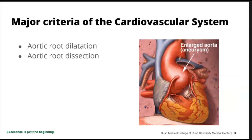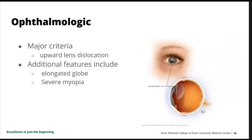Major cardiovascular criteria includes aortic root dilatation and aortic dissection — the aorta comes right out of the heart, gets enlarged, and can rip. A dissection is a ripping where blood pools in between — a very bad thing. The major ophthalmologic criterion is an upward dislocation of the lens — remember from homocystinuria there can be a downward dislocation, but in Marfan's it goes upward; this is a favorite of board questions. Other ophthalmologic features include an elongated globe and usually severe myopia like a minus 7 or minus 8.